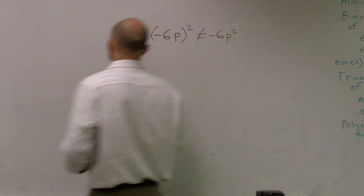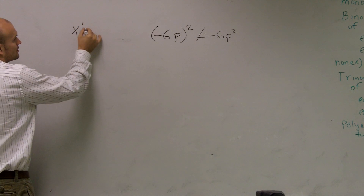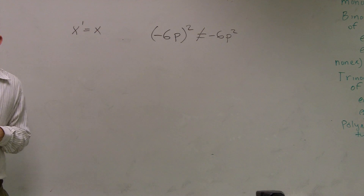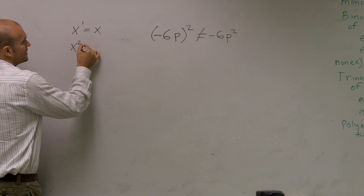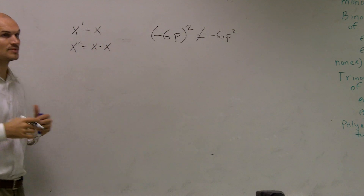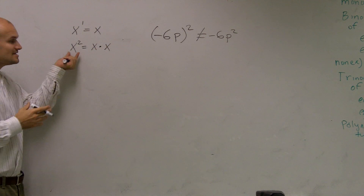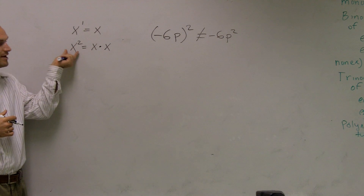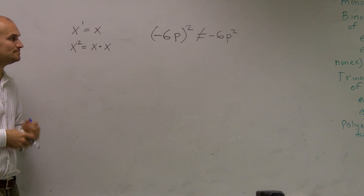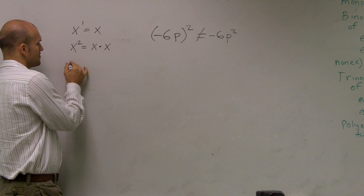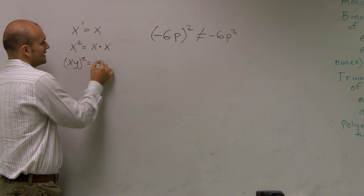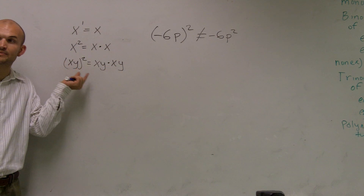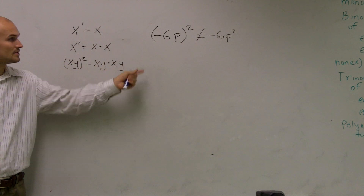So, negative 6 p squared — first thing, guys, we need to remember what our exponents mean. x to the first means x multiplied by itself one time, which is x. x squared means x times x. It doesn't matter what's being squared; whatever is being squared is multiplied by itself. So if I said (xy) squared, that would mean xy times xy. Whatever's inside your parentheses that's being squared is being multiplied by itself.